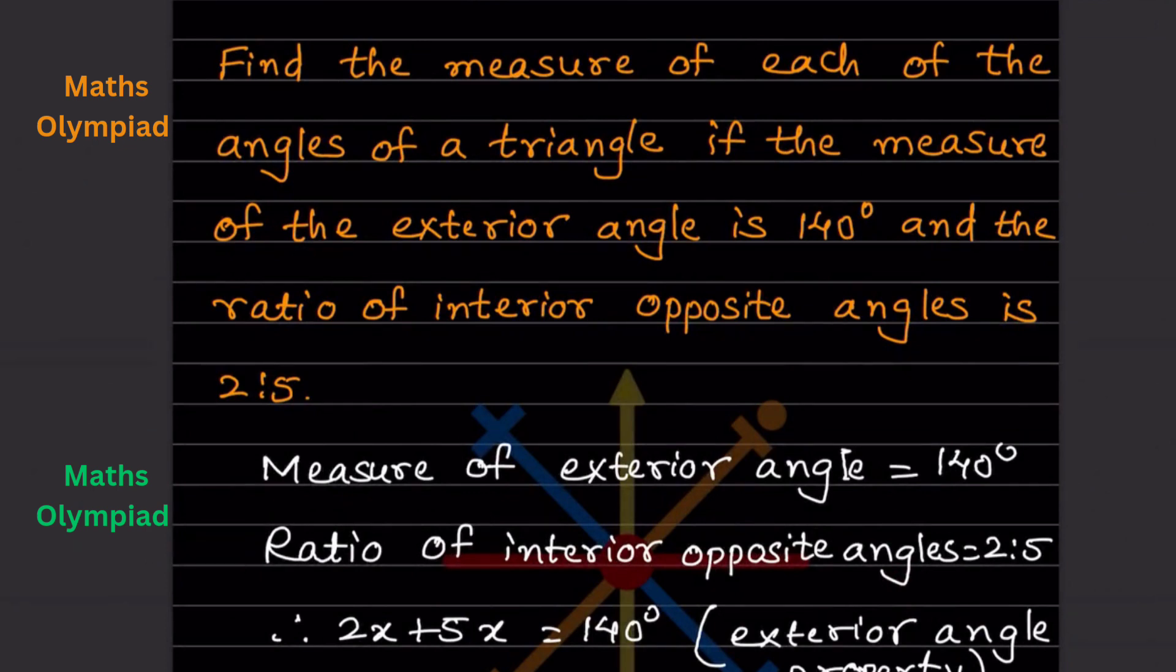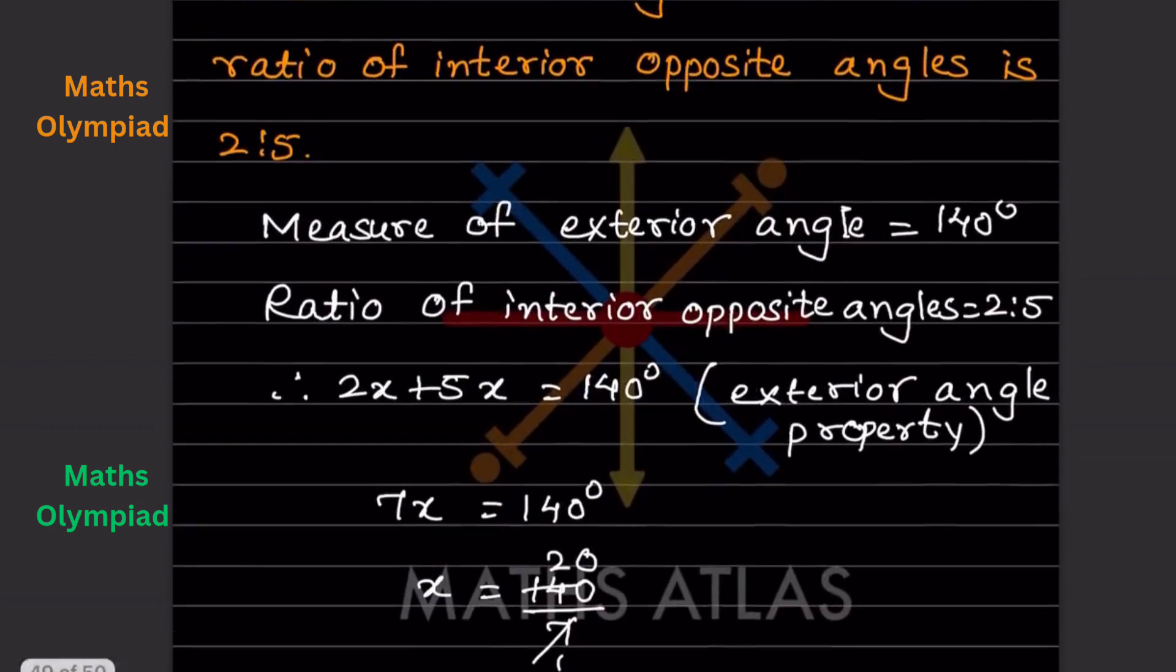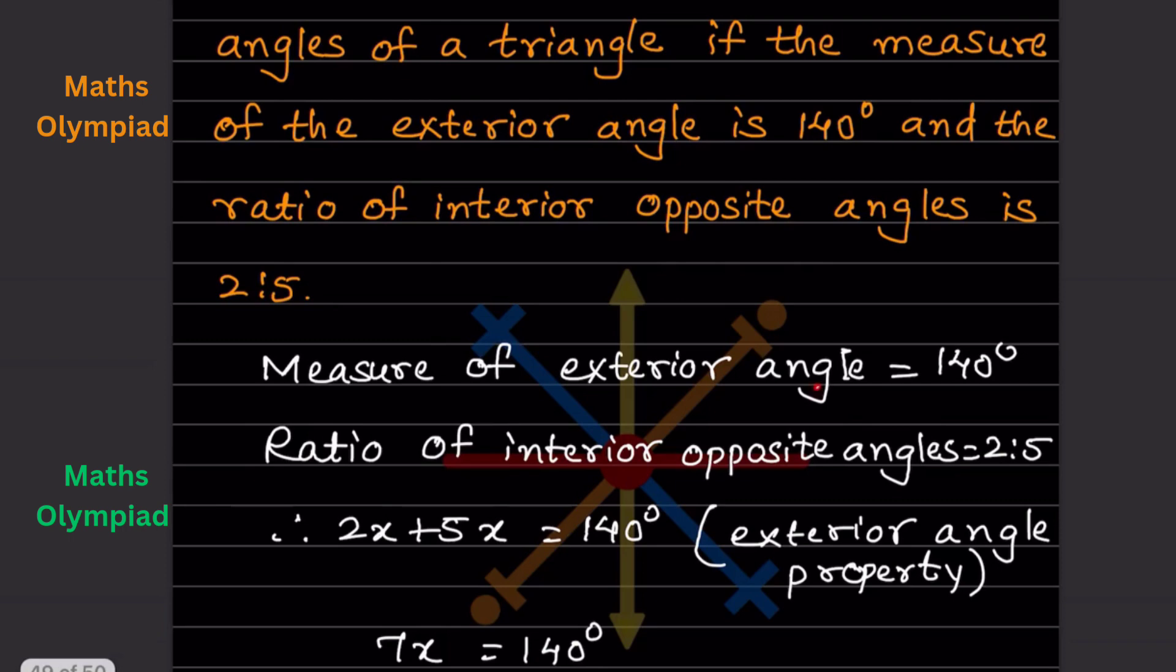Hi learners, welcome to my YouTube channel. We'll solve this question: Find the measure of each angle of a triangle if the measure of the exterior angle is 140° and the ratio of interior opposite angles is 2:5.